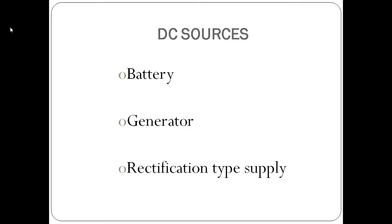If you look at the DC sources, the major sources are battery, generator, and rectification type supply. Our topic of discussion is the rectification type supply.